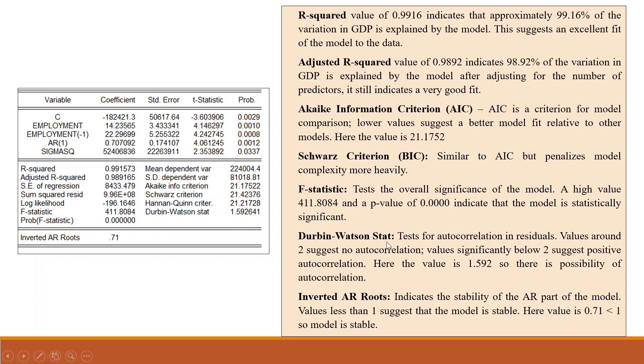Durbin-Watson stats. It tests for autocorrelation in residuals. Values around 2 suggest no correlation. Values significantly below 2 suggest positive autocorrelation. Here the value is 1.592, so there is a possibility of autocorrelation.